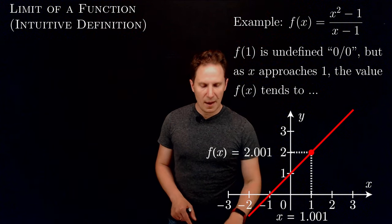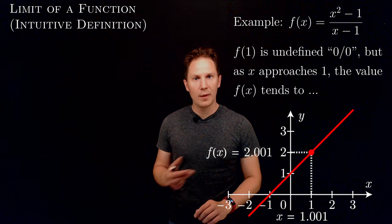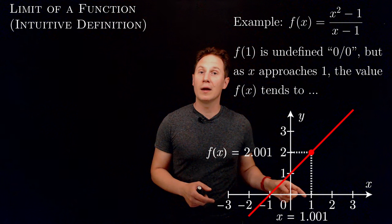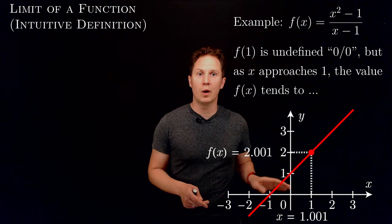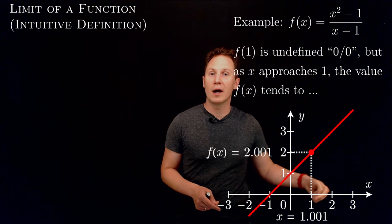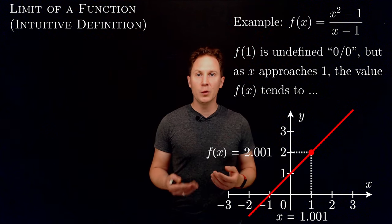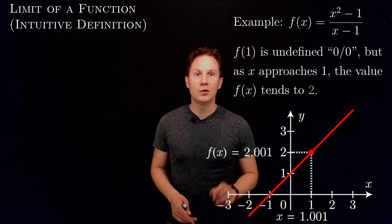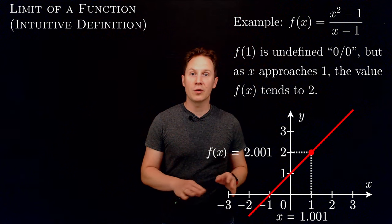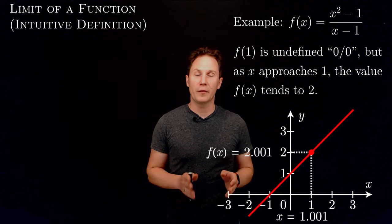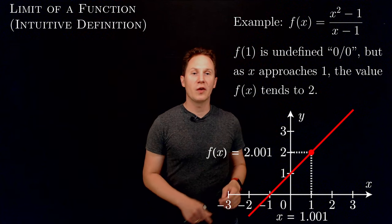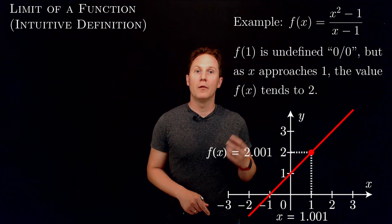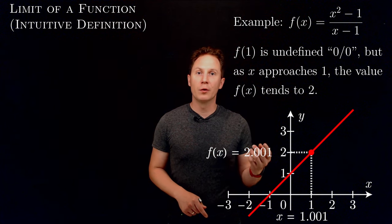So at this point we may conclude that no matter how x approaches 1 — this point on the number line, from the left or the right — the output values f(x) tend to the number 2. This is the intuition behind the limit of a function, and in this case we say that the limit as x approaches 1 of f(x) equals 2.